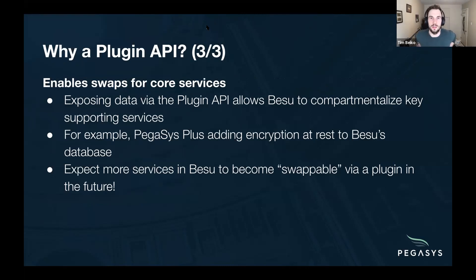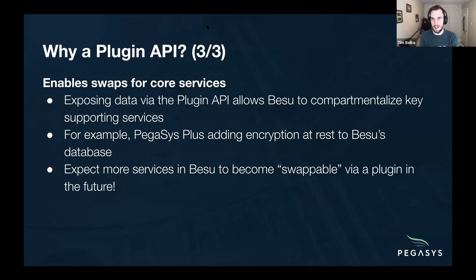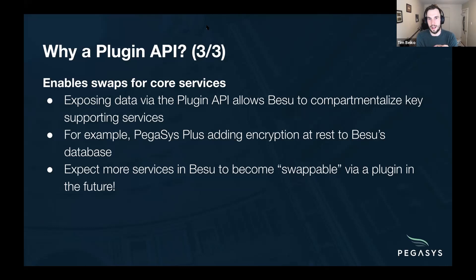That's a really good question. There are two main reasons for that. The first is that basically every service you end up using as part of your stack has trade-offs. Some databases might be more optimized for certain types of queries. As enterprises deploying their own networks have more and more niche or unique use cases, it allows them to swap a service for something that's just more suited for their environment. What we have coming as a default with Besu is what we believe to be the best default for an Ethereum client, but there are definitely cases where that's not appropriate.